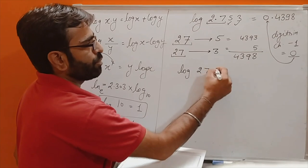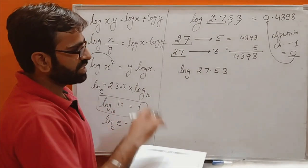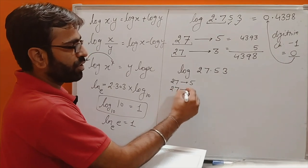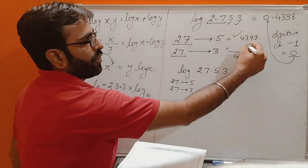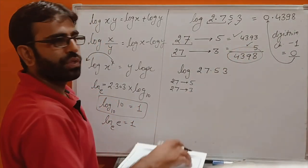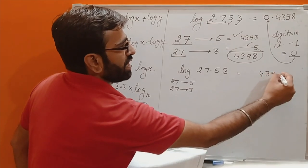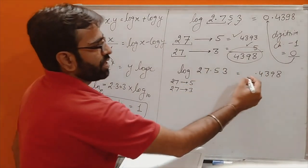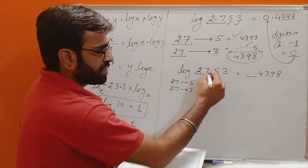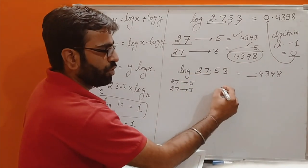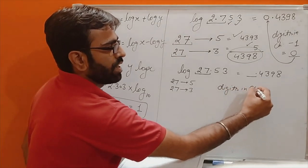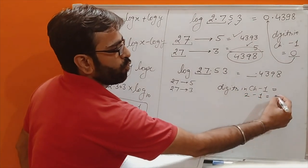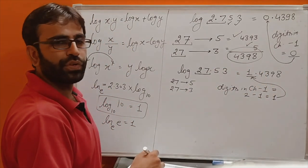Let's take another example: log 27.53. Again, we look at 27 in column 5 and the mean difference of 27 in column 3, giving 4393 and 5 respectively. The sum is again 4398. But now the characteristic is 27, which has 2 digits. So 2 − 1 = 1, and the value is 1.4398.